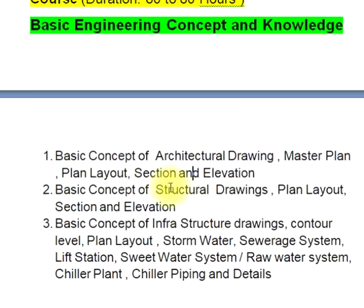We will cover master plan, plan layout, section, and elevation. I will explain how to read architecture drawings — what the line types mean, what a section is, what a plan is, what a master plan and elevation are. Mechanical engineers must know architecture plans to design easily, since every line has a meaning. This is compulsory for anyone who is fresh or wants to join the mechanical building services field.